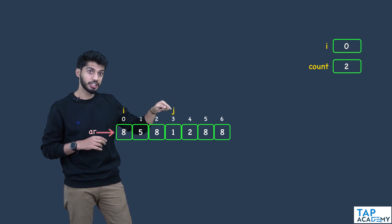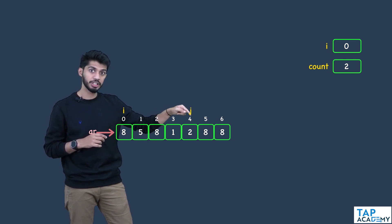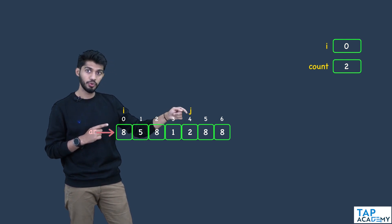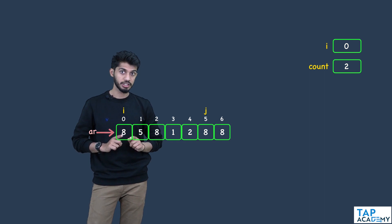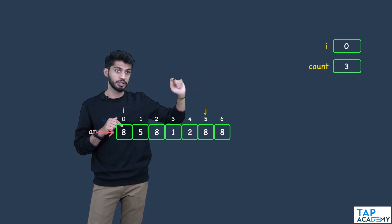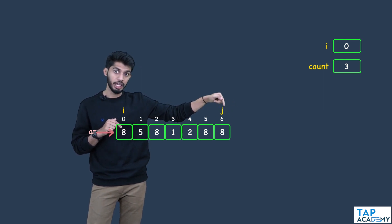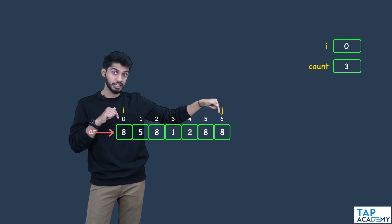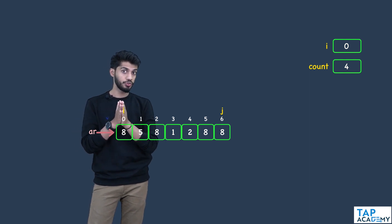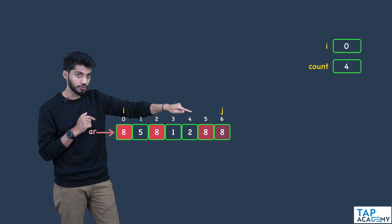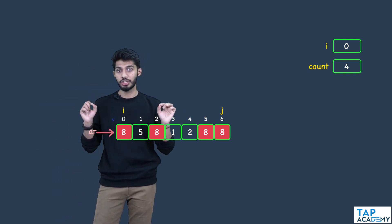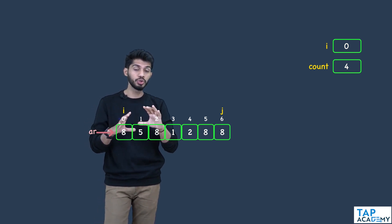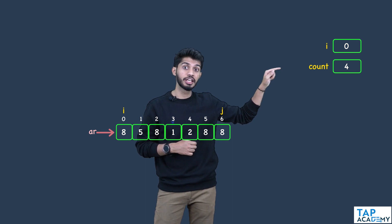Continuing, I increase j and check whether the element at index j equals the element at index i — no, do nothing. Next index: no, do nothing. At index 5: yes, so I increase count, it becomes 3. At index 6: yes, it is equal, so I increase count. Now the value of count has become 4, and 8 has occurred 4 times. So I have traversed the array and checked whether the element at index i equals the element at each index j. After doing this, I check whether the count value is greater than n/2.